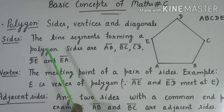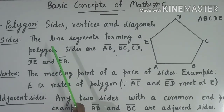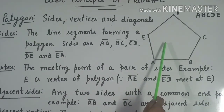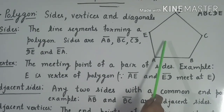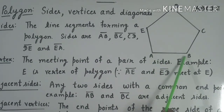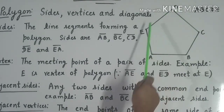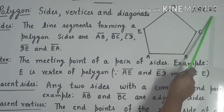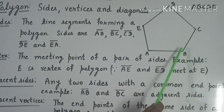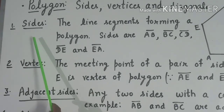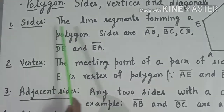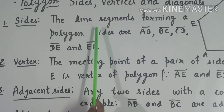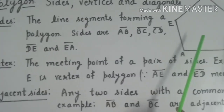Now we will discuss sides, vertices, and diagonals of a polygon. Let's look at the figure of the polygon labeled A, B, C, D, E. The first topic is sides. The line segments forming a polygon are called sides.